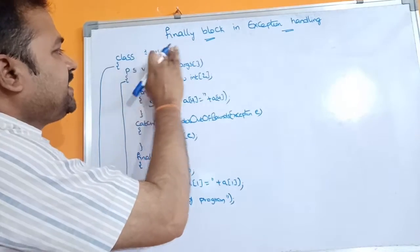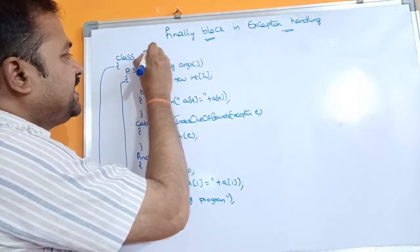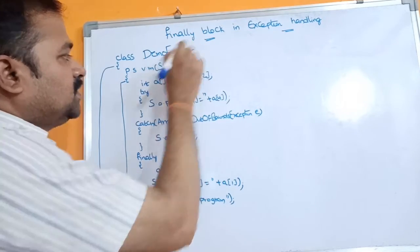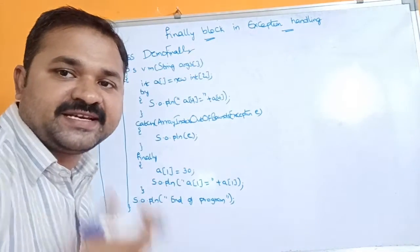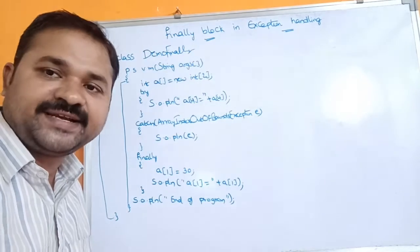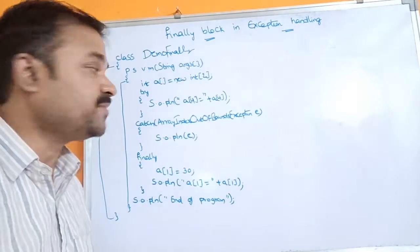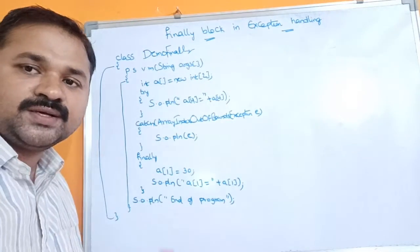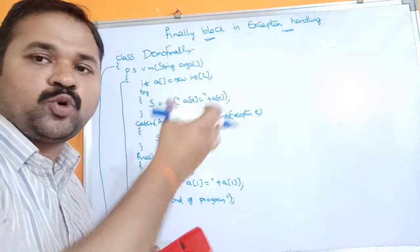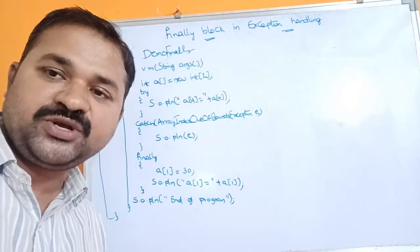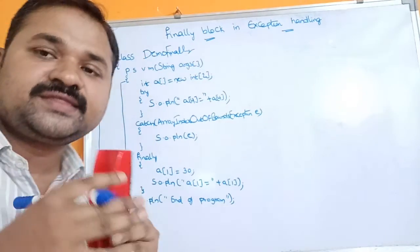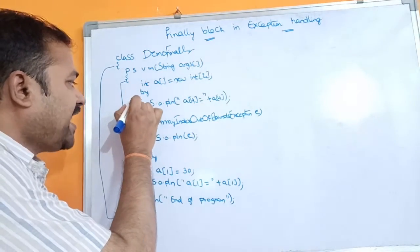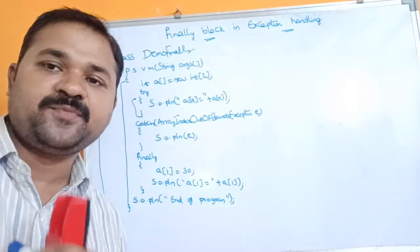The name of the class is DemoFinally. It has a public static void main method. We know that execution of a program starts from the main method. Next, int[] a is equal to new int[2], so memory is allocated for two elements: a[0] and a[1]. Next we have a try block.